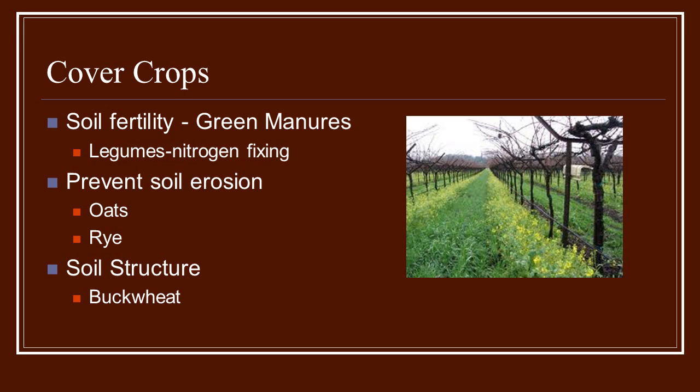Going back to those green manures, one of the reasons they're able to fix nitrogen is because of the little nodules on their roots. These nodules are created by a bacteria that helps the plants take nitrogen out of the air and fixate it through the root system, putting it back into the soil. Cover crops are great — not used as much as they should be, but for an organic system they can be invaluable.